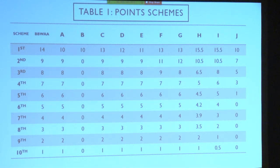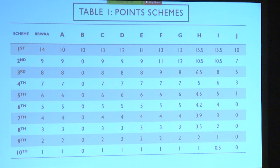Schemes F and G say: if first place matters a lot, then second place probably matters quite a bit too. So what if we kept a gap between first and third but also made a bigger gap between second and third? Scheme F gives 13-11-9, and Scheme G gives 13-12-8, so in Scheme G we value first and second both very highly with a gap after. Schemes H, I, and J are three schemes Benoit originally proposed that produced really big shifts in his original analysis, and I applied them again to see how they affect more recent races.